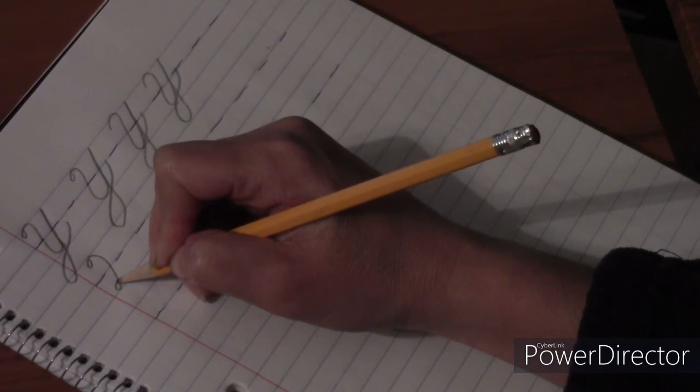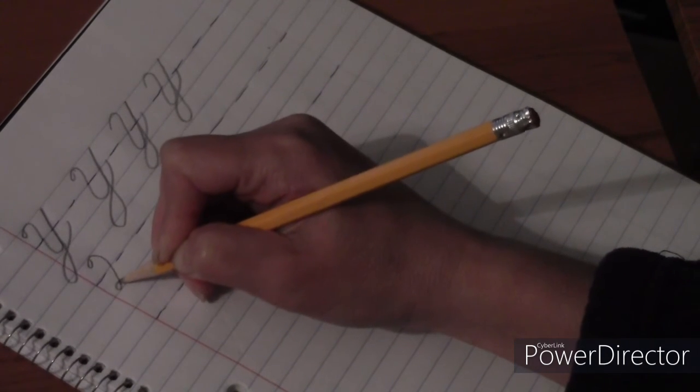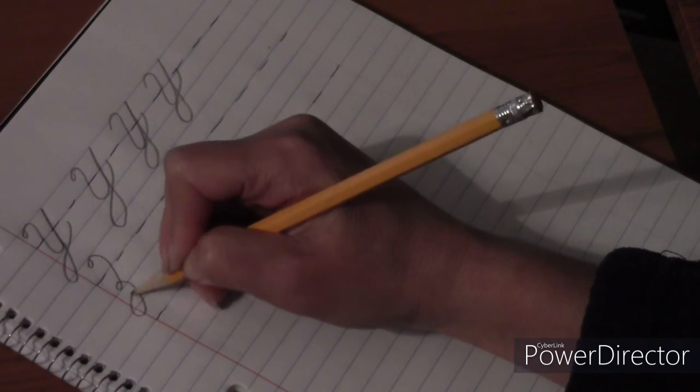Now do you see how it's almost looking like a Q? Like if I went this way it would be a Q, but I'm not gonna go that way. I'm gonna make a loop like a letter Y.